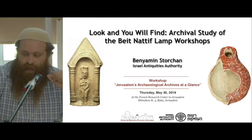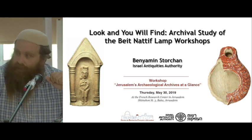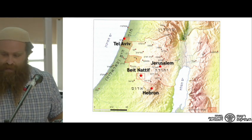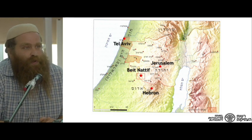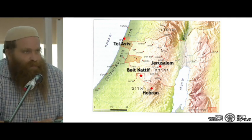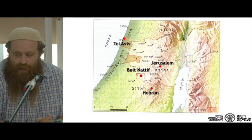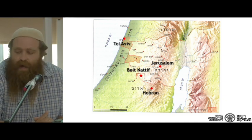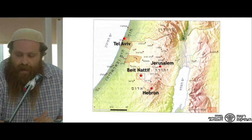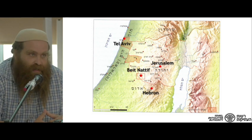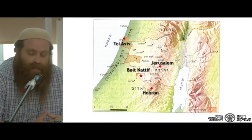We are talking about a site called Beit Natif, which is located in the Judean Shephelah. It sort of forms a triangle between Jerusalem and Hebron to the west. It is the transitional region between the highlands to the east and the coastland to the west.